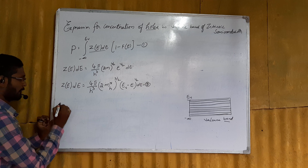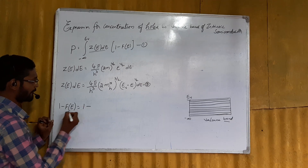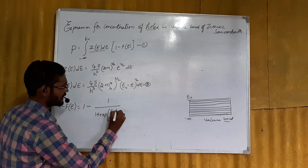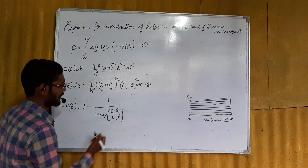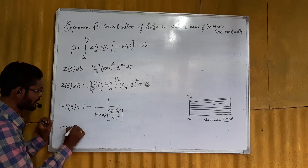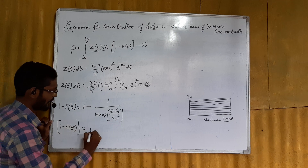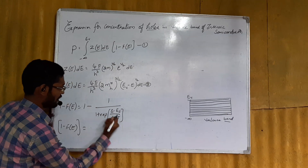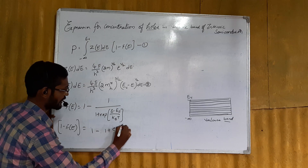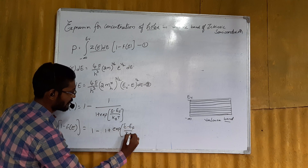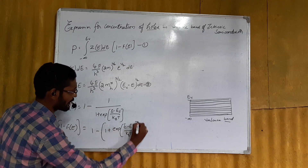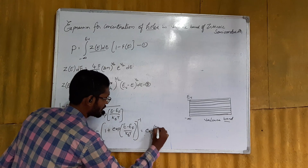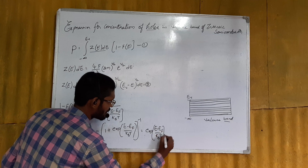The term (1 - f(e)) represents one minus the Fermi-Dirac distribution function. The Fermi-Dirac function is f(e) = 1 / (1 + exp((e - Ef) / kBT)). Therefore, 1 - f(e) simplifies to exp((e - Ef) / kBT). Name this equation 3.